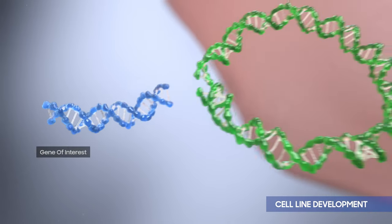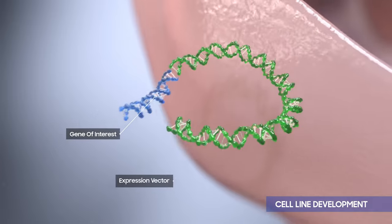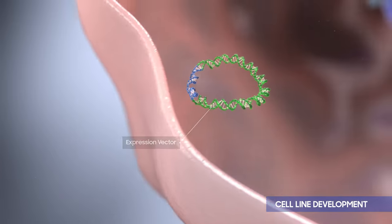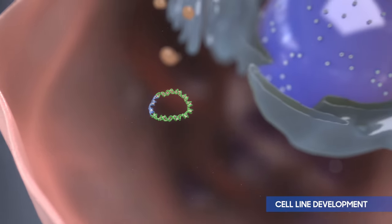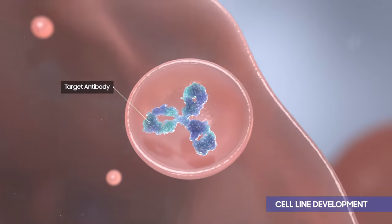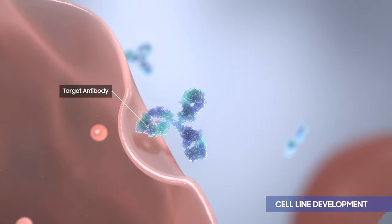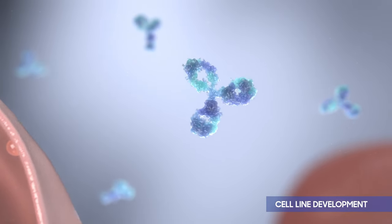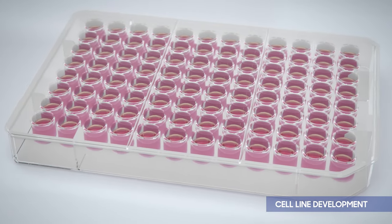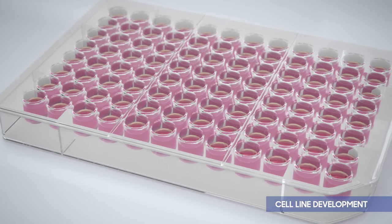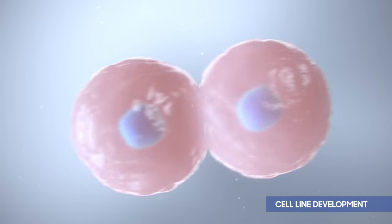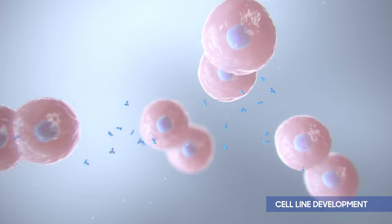Cell line development begins by the insertion of your gene of interest into an expression vector. The transfected cell expresses your target antibodies and the antibodies are secreted from the cells. A large number of cell pools are then screened and single cell clones are isolated based on high titer and product quality.